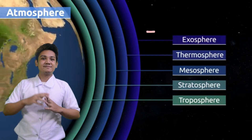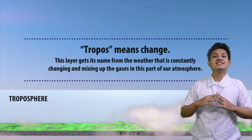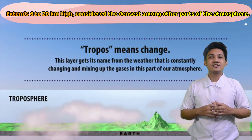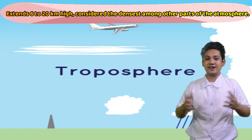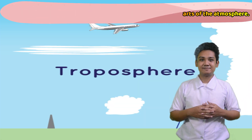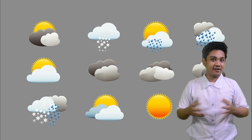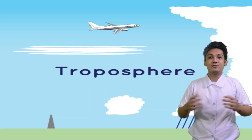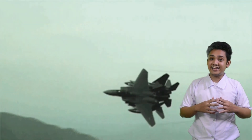Number 1 is the troposphere. It extends 6 to 20 km high and is considered the densest among all parts of the atmosphere. All weather types occur in this region. Most jets and planes fly slightly above this region to avoid the turbulence from weather.